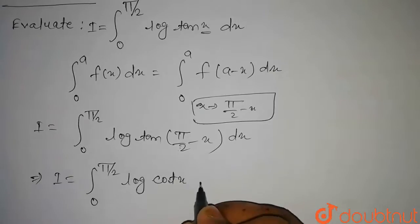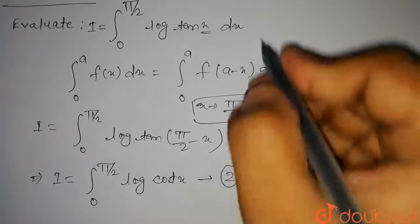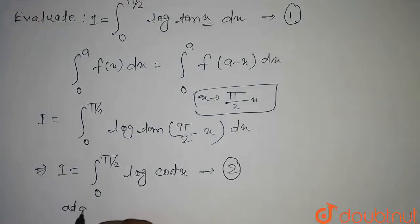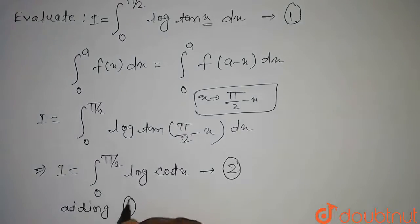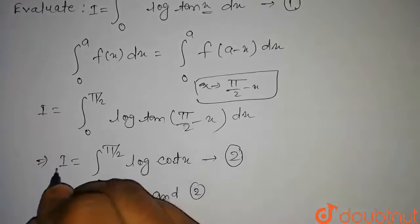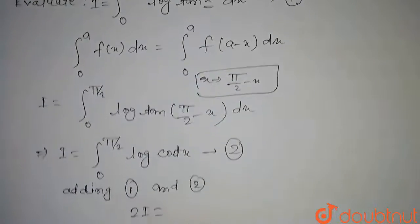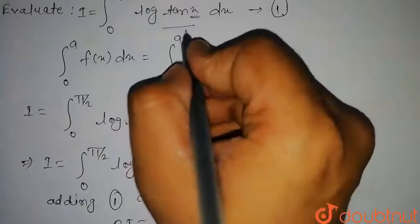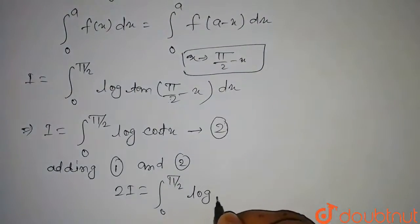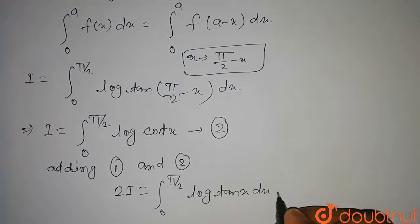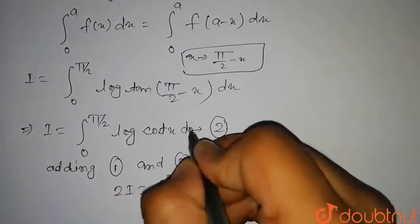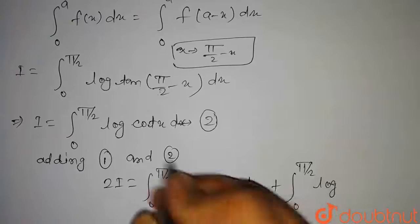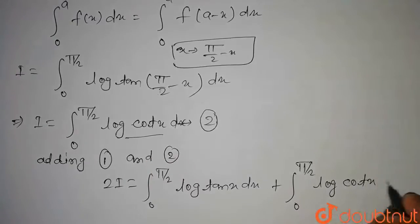Now consider this as equation number 2 and consider the original as equation number 1. Adding equation 1 and equation 2, we get I plus I, that is 2I, is equal to integral 0 to π/2 of log(tan x) dx plus integral 0 to π/2 of log(cot x) dx.